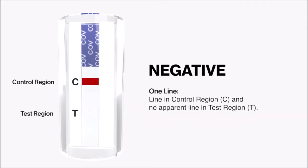A negative result shows one line in control region C and no apparent line in test region T.